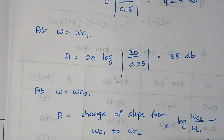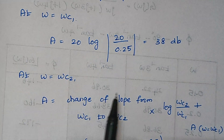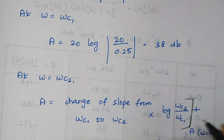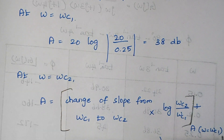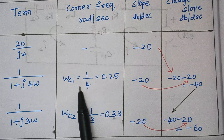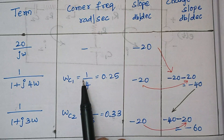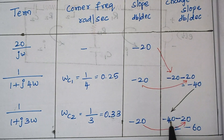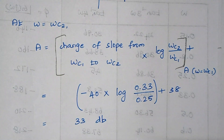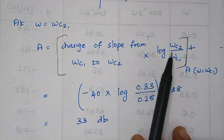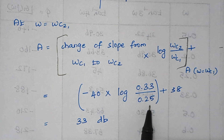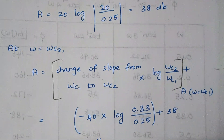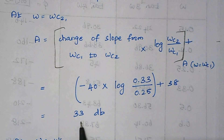At ω = ωc2, the formula changes to: change of slope from ωc1 to ωc2 × log(ωc2/ωc1) + A at ωc1. The change of slope from ωc1 to ωc2 is −40. Substituting: −40 × log(0.33/0.25) + 38 dB gives us 33 dB.